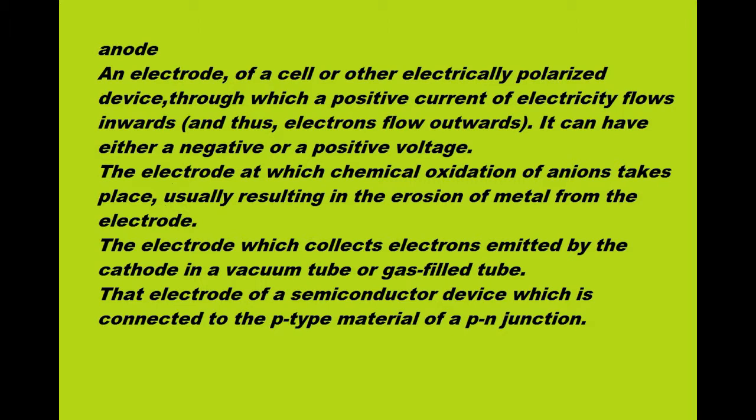The electrode at which chemical oxidation of anions takes place, usually resulting in the erosion of metal from the electrode. The electrode which collects electrons emitted by the cathode, in a vacuum tube or gas-filled tube. That electrode of a semiconductor device which is connected to the P-type material of a P-N junction.